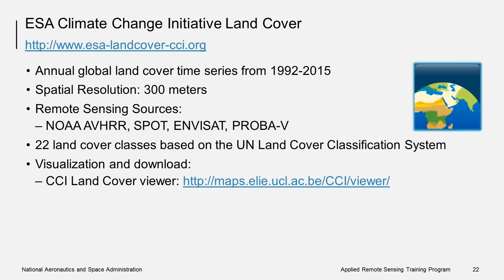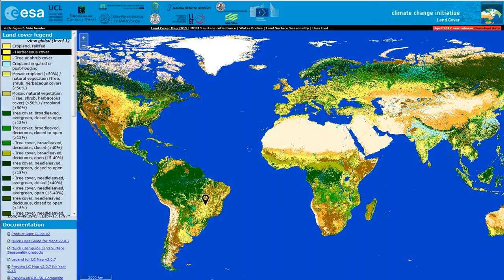Through its climate change initiative, the European Space Agency produces annual global land cover time series data from 1992 to 2015 at a spatial resolution of 300 meters. The effort was supported by processing data from different satellite missions, including NOAA AVHRR, SPOT, NVSTAT, and PROBAV. The data include 22 land cover classes based on the UN land cover classification system. You can visualize and download these data using the CCI land cover viewer. On the left you can see the various land cover types including percent tree cover. You can select the year you want on the top of the screen, and you can also get graphs that include greenness seasonality, snow seasonality, and burned area seasonality. You can download the data using a pixel-based extraction in CSV format or as raster data in GIS-ready formats.